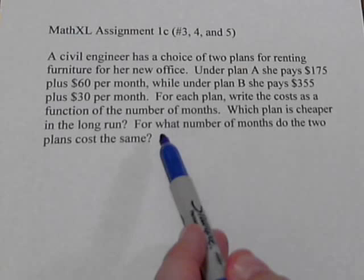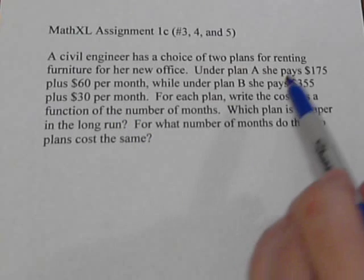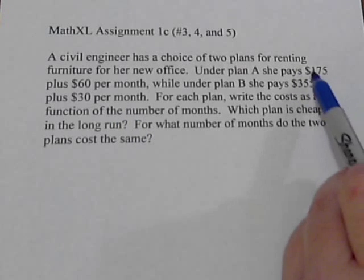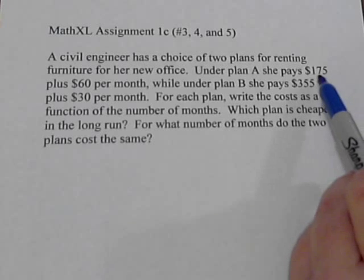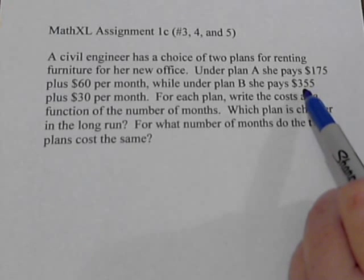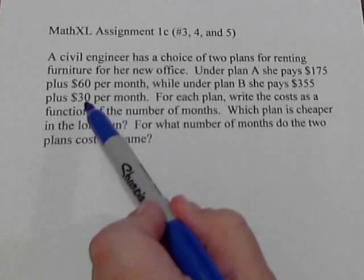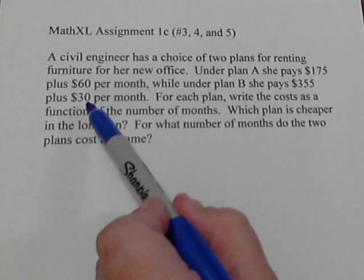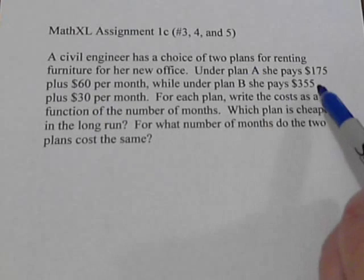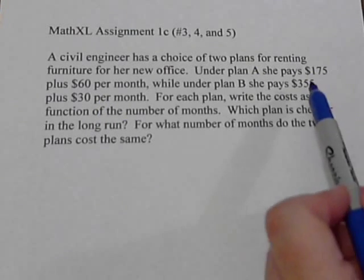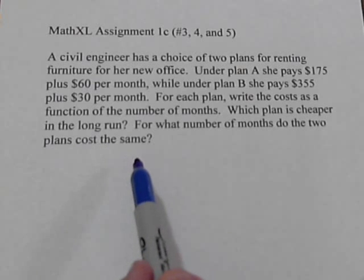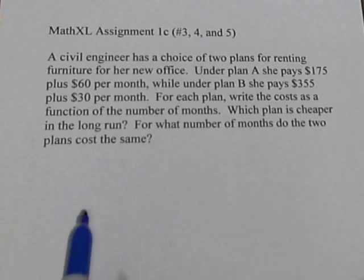Because right now it seems like plan A should be cheaper because she's paying less upfront, only $175 to $355. But plan B has a cheaper monthly rental, which means eventually if she uses it long enough, she'll make up the difference here. And that's what we want to find out: how long will it be until she makes up that difference?